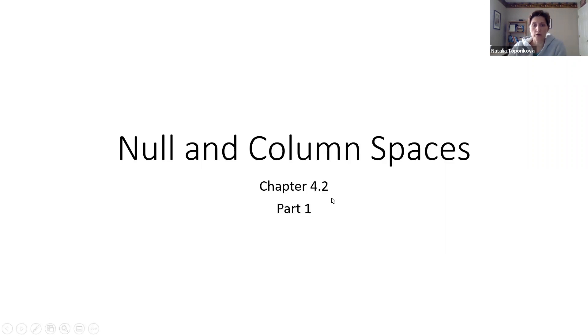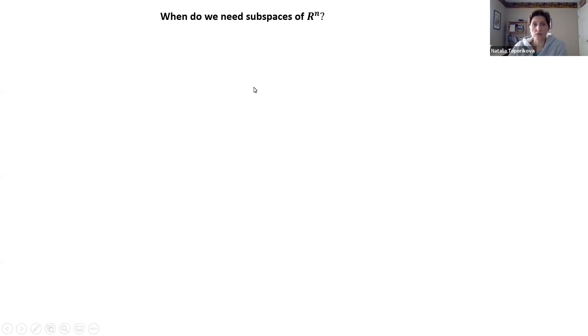Hello, this is the first part of chapter 4.2, and we will talk about null and column spaces. Just to start, you're probably wondering from the previous chapter, why do we talk so much about spaces and subspaces? What's the point? And at what circumstances do we need them?